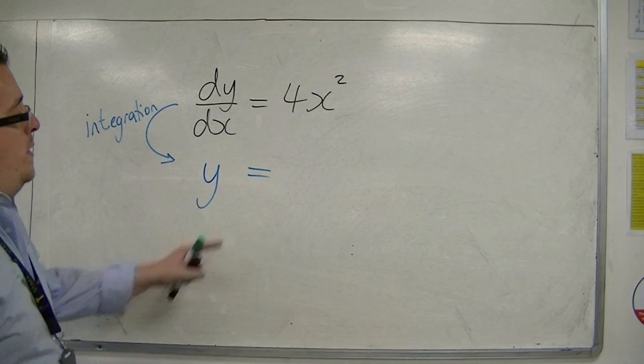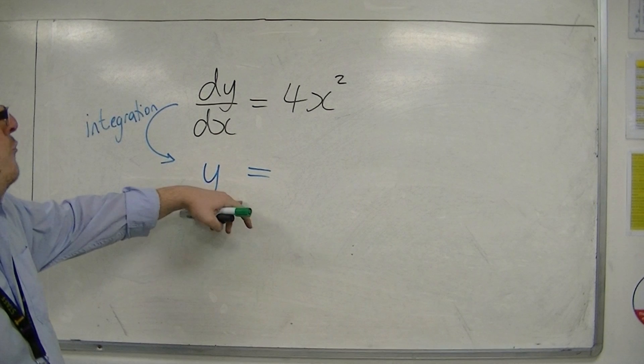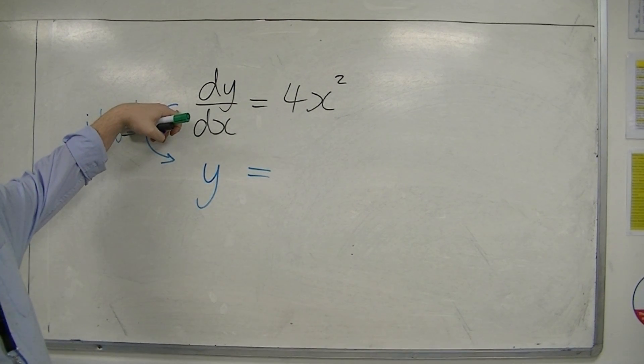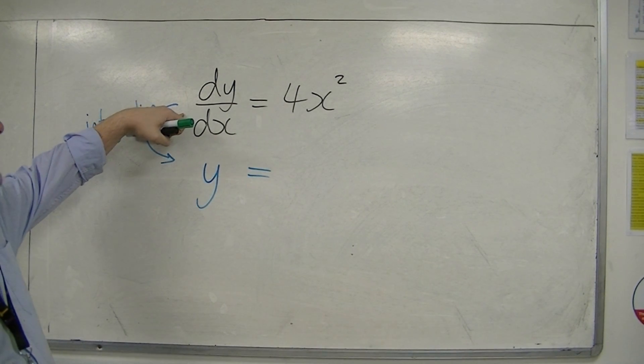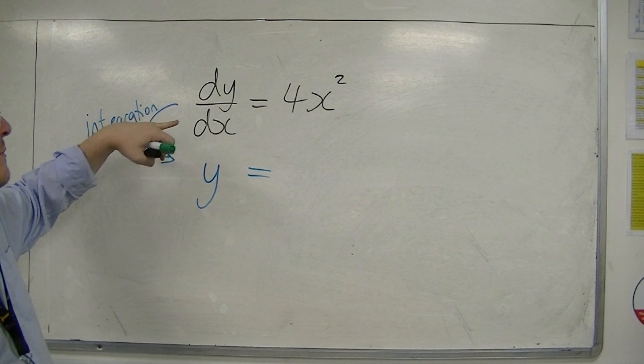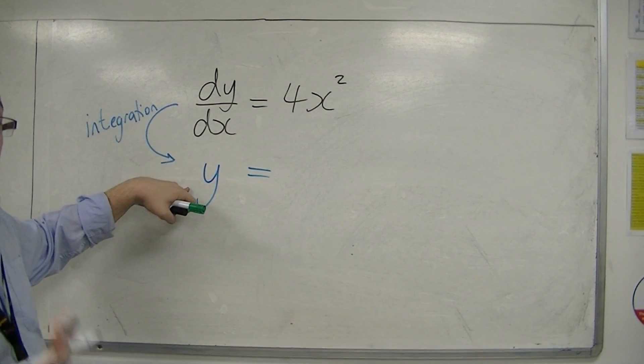Because usually, we have a y equals, and we differentiate to find dy by dx. This way, we are reversing the process, so from dy by dx, we need to get to y. So we integrate.